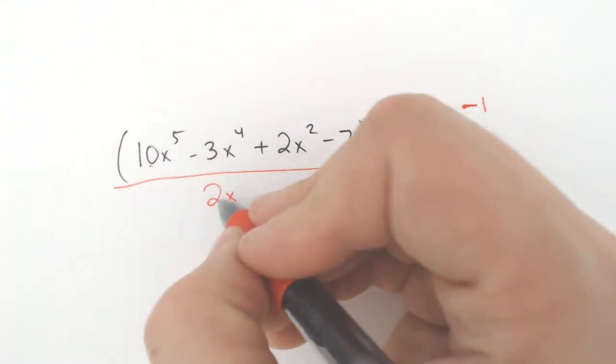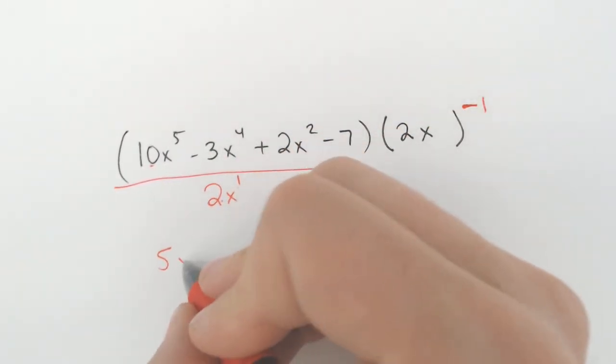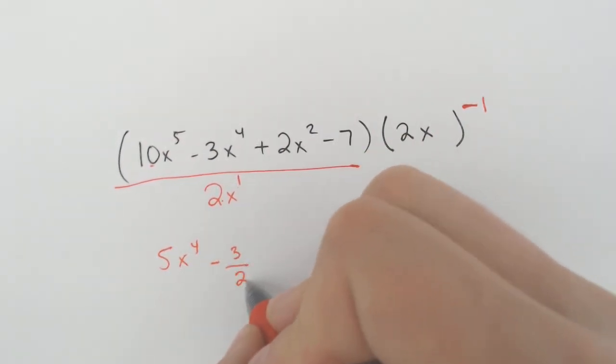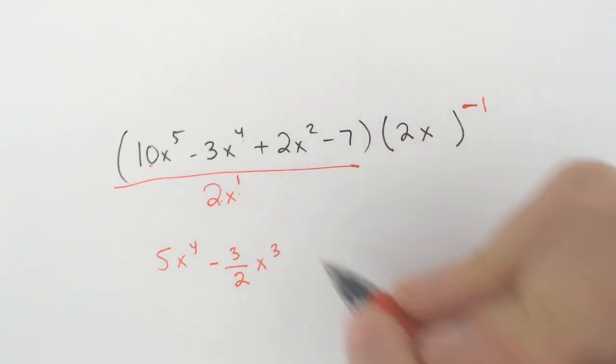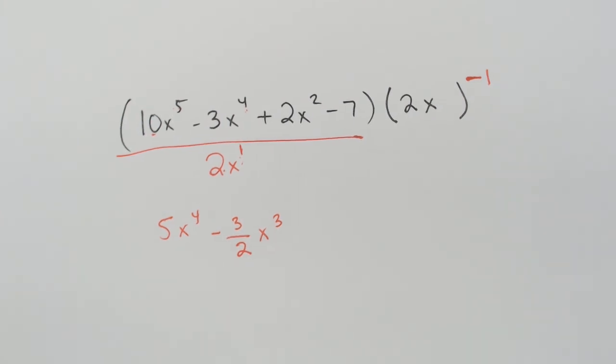So we're going to take 10 and divide by 2 and get 5. Take away an x to the first power. We'd have x to the 4th minus 3 over 2. Take away an x and we would have an x to the 3rd. Now you can write that x to the 3rd on the top of the fraction or off to the side. Both are allowed.